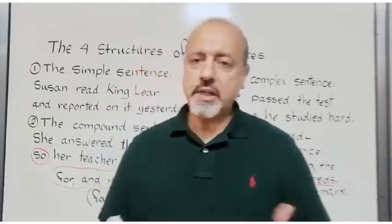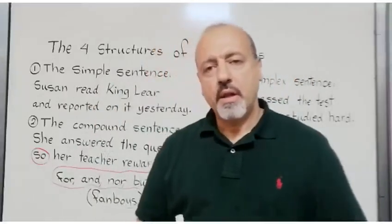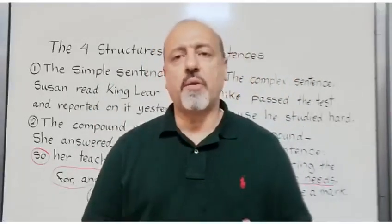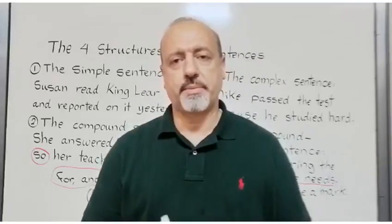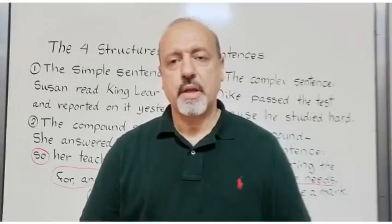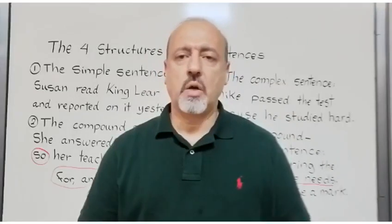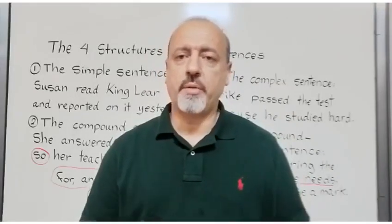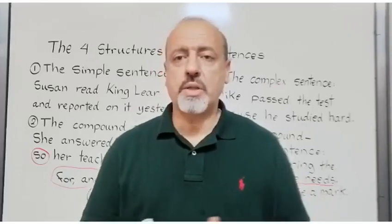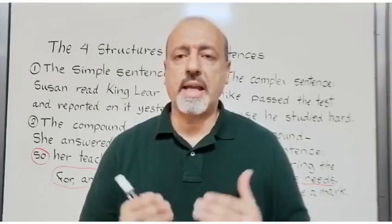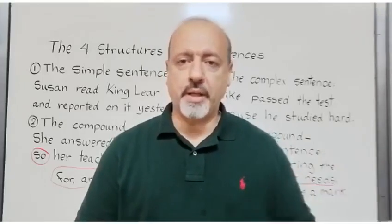The first structure is the simple sentence. The simple sentence consists of one independent clause with no subordinate clause. An independent clause is a complete sentence with a subject, a verb, and a complete thought. However, the subordinate clause is an incomplete sentence — it gives more information about the independent clause.